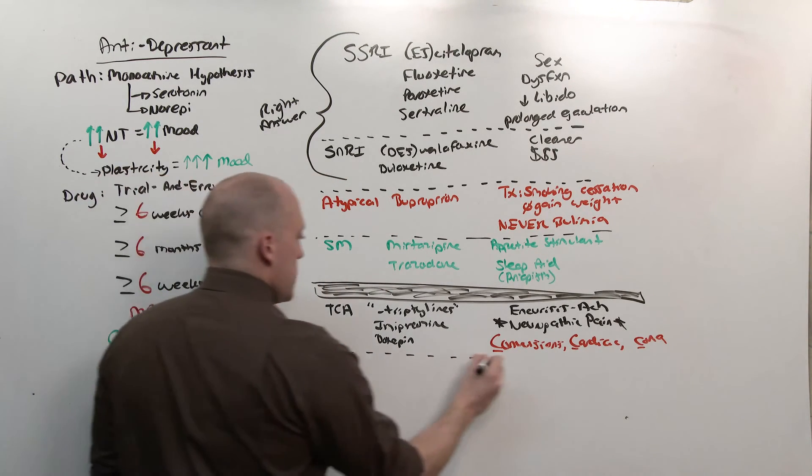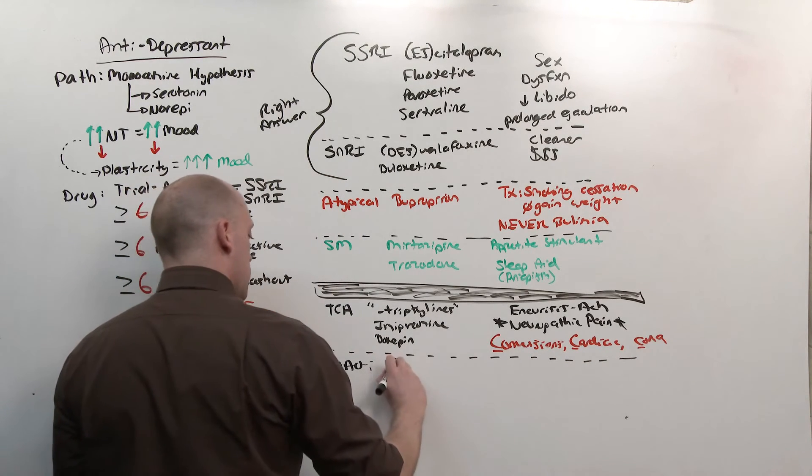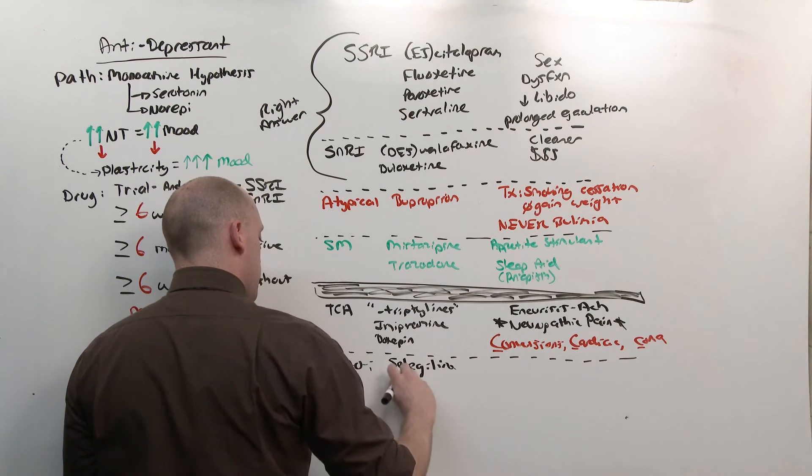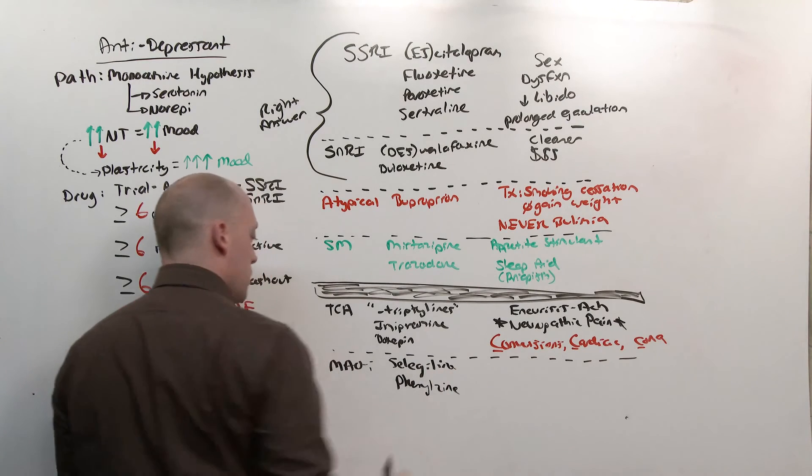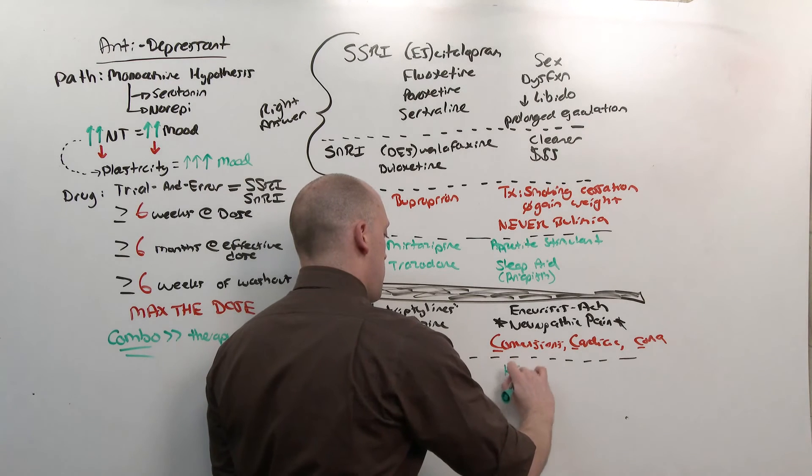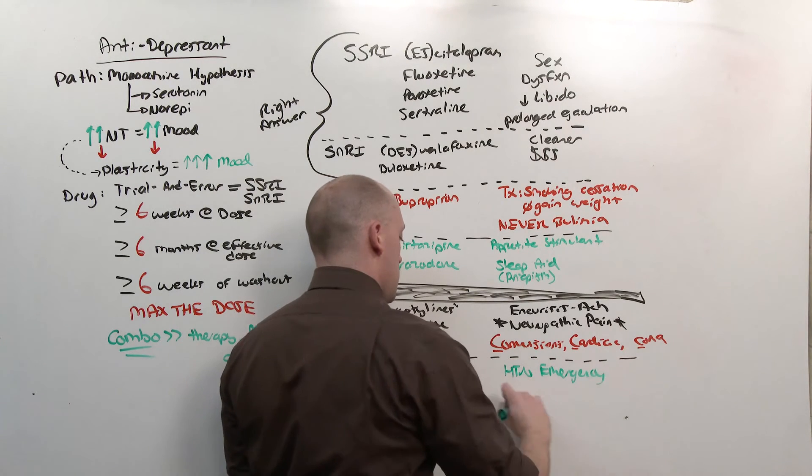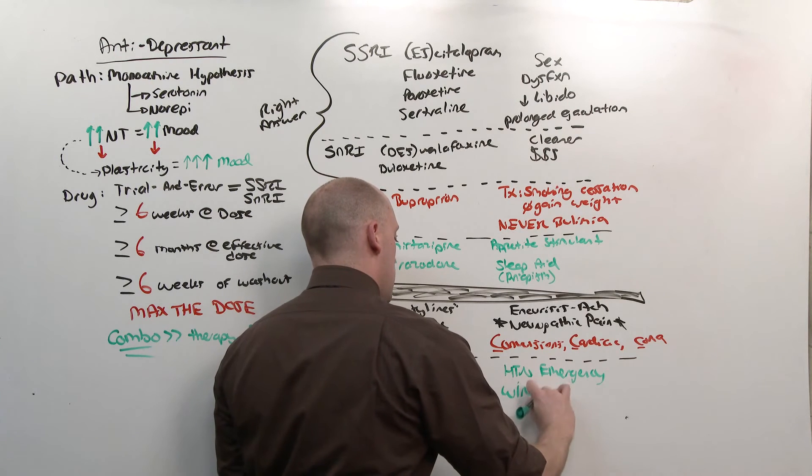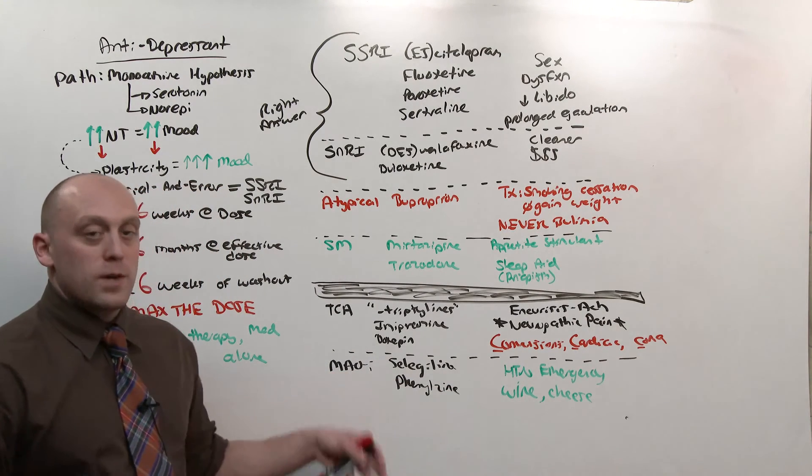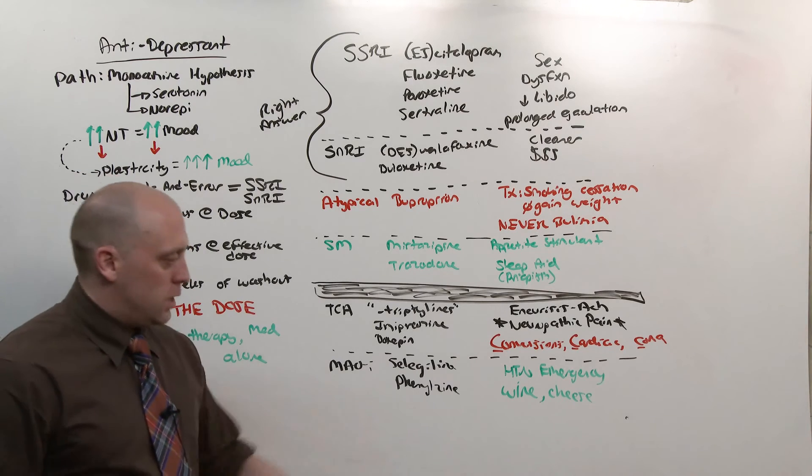And lastly, one that is never used and is always the wrong answer, is the MAOIs: selegiline and phenelzine. This is a throwback to pharmacology, and the only time you'll see this is in relation to a hypertensive emergency, especially when the patient eats wine or cheese. It's a product of tyramine, which happens to act in a similar way, and so effectively you double up the medication, increase the amount of norepinephrine, leading to a hypertensive crisis.